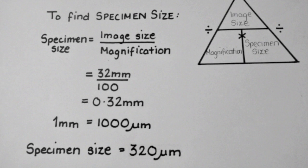Recalling that 1 millimeter is 1000 micrometers, you can multiply the 0.32 millimeters by 1000 to get the specimen size in micrometers. A final answer of 320 micrometers.